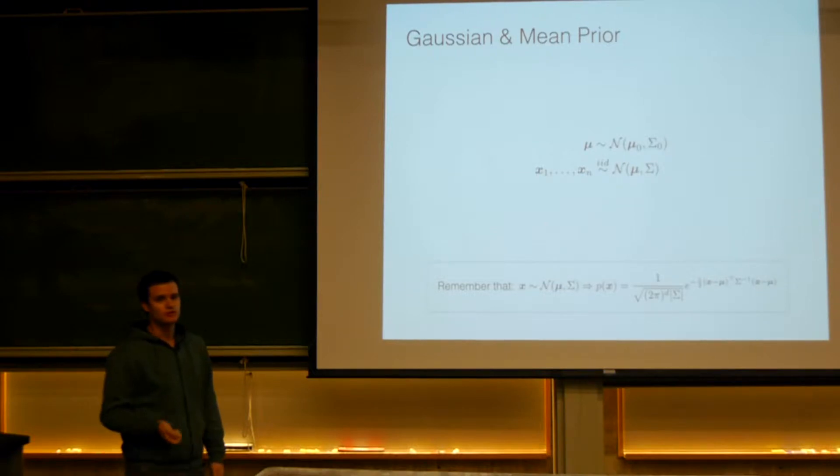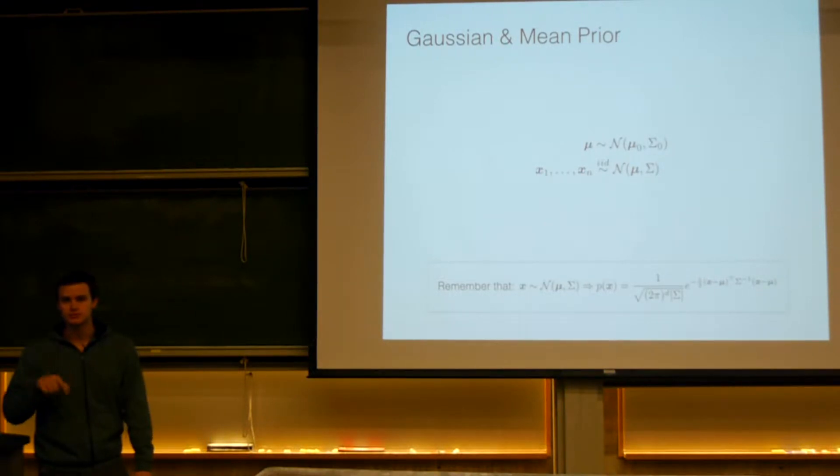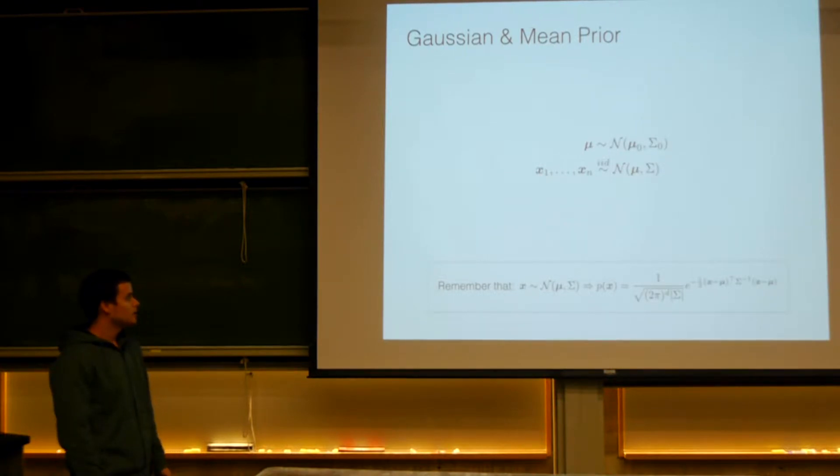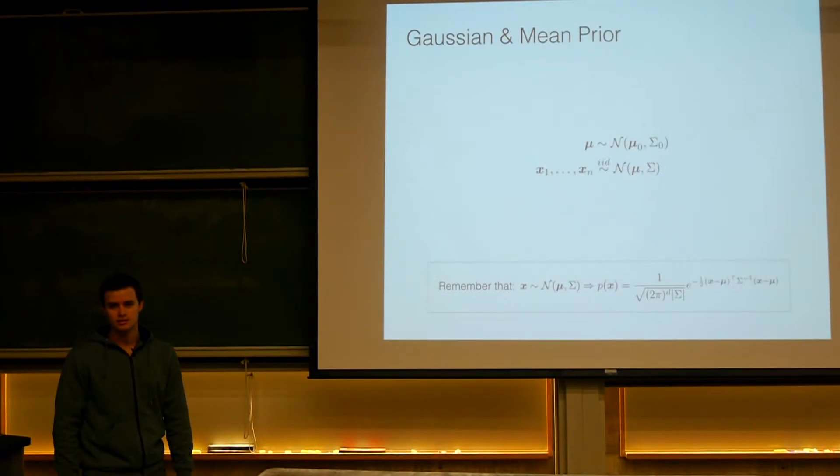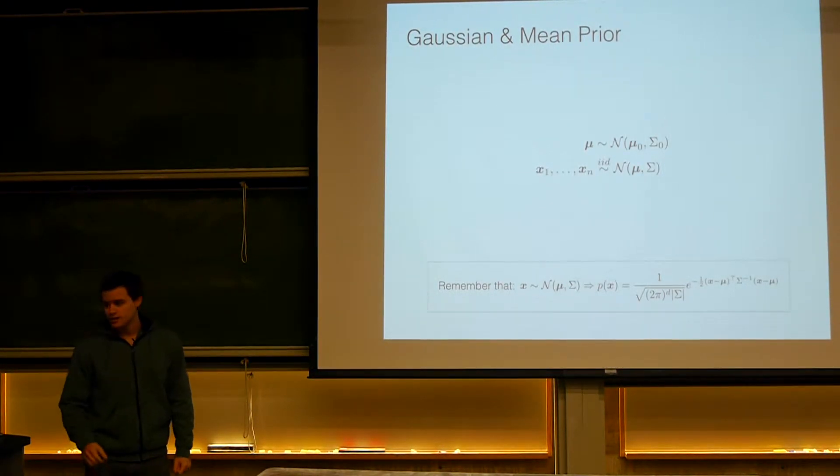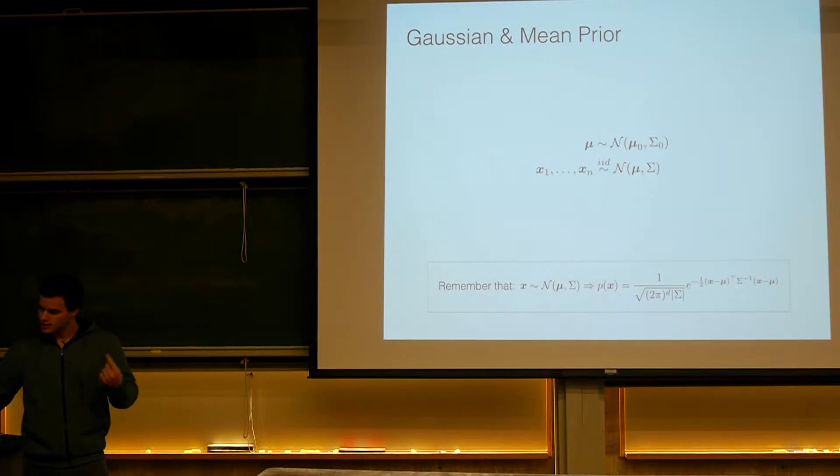Okay, so we're going to start with this simple example. We have data drawn from a normal distribution with mean mu and covariance matrix sigma and we assign a prior to the mean of that distribution mu zero sigma zero and later on we're going to move to the case where we assign a prior to both the mean and the covariance at the same time.